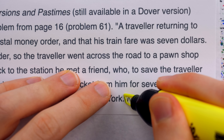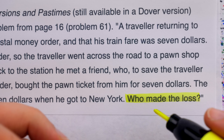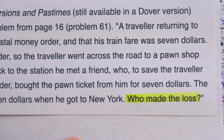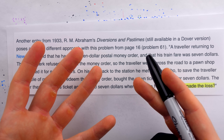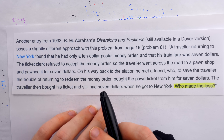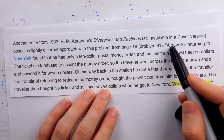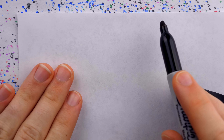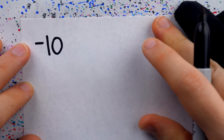Now, I'm not 100% sure I understand the phrasing 'who made the loss' — does that just mean who lost money? I feel like it's pretty obvious. Let's just run the basic numbers. The traveler had that $10 money order, but he pawned it, and he's not going to get it back, because he gave his friend the pawn ticket that would allow him to get it back instead. So we'll chalk that up to minus $10 — he loses that money order.